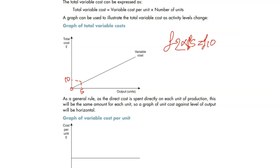If you're producing 100 units, it's going to cost you more. 2 times 100 equals 200. It's going to cost you 200 pounds. So the more you produce, the more it costs you.